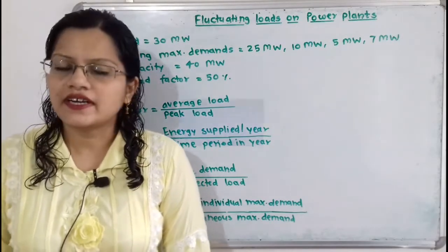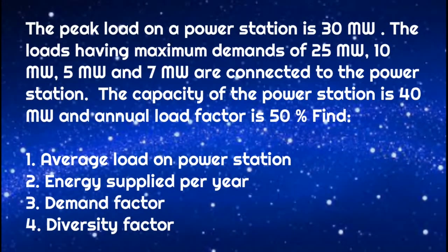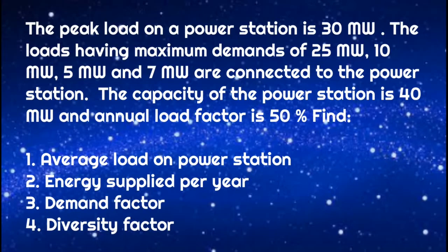I will first read the given problem. The peak load on a power station is 30 MW. The loads having maximum demand of 25 MW, 10 MW, 5 MW and 7 MW are connected to the power station. The capacity of the power station is 40 MW and annual load factor is 50%. Find: first, average load on power station; second, energy supplied per year; third, demand factor; and fourth, diversity factor.